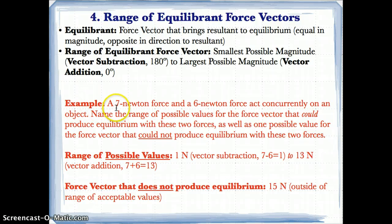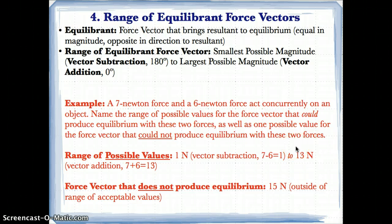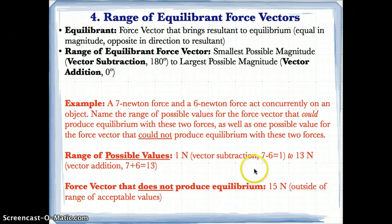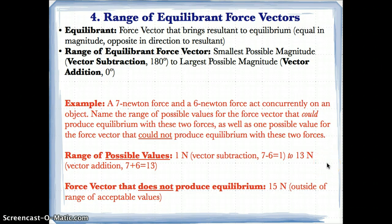Example: a seven newton force and a six newton force act concurrently on an object. The range of possible values for the equilibrant uses vector subtraction for the smallest — seven minus six equals one newton — and vector addition for the largest — seven plus six equals 13 newtons. So the range of possible values goes from one newton to 13 newtons.